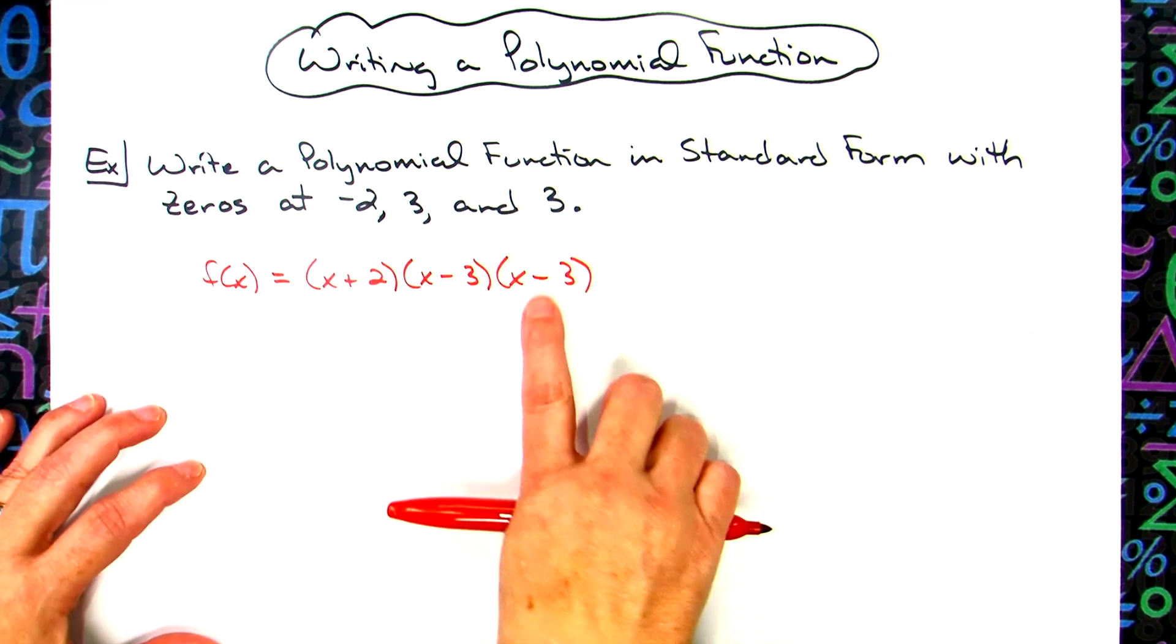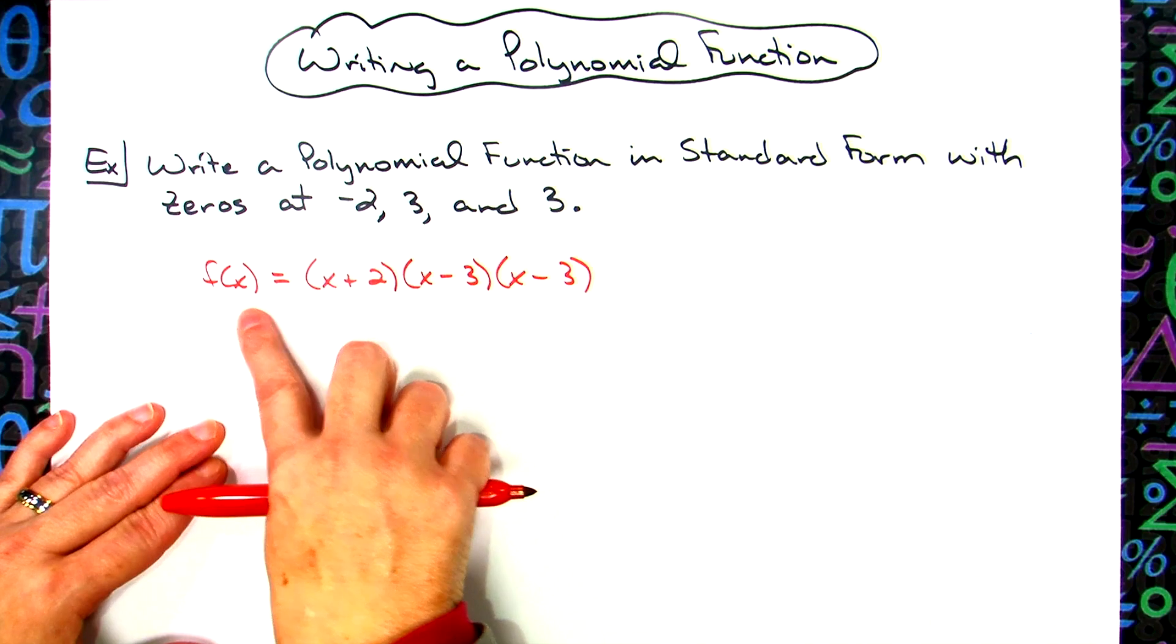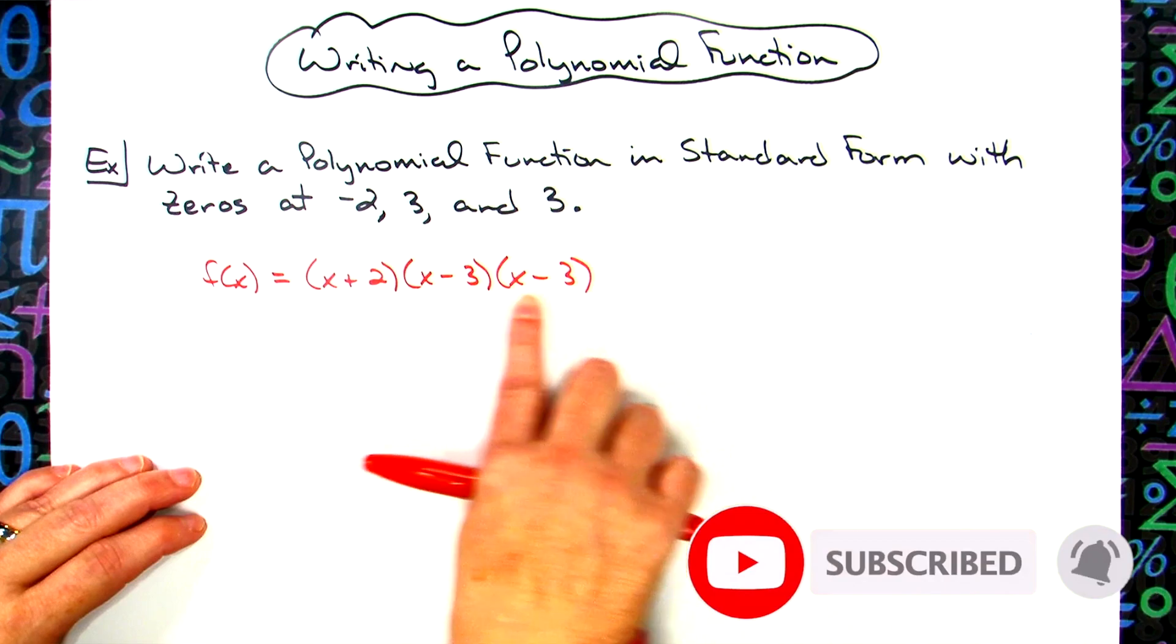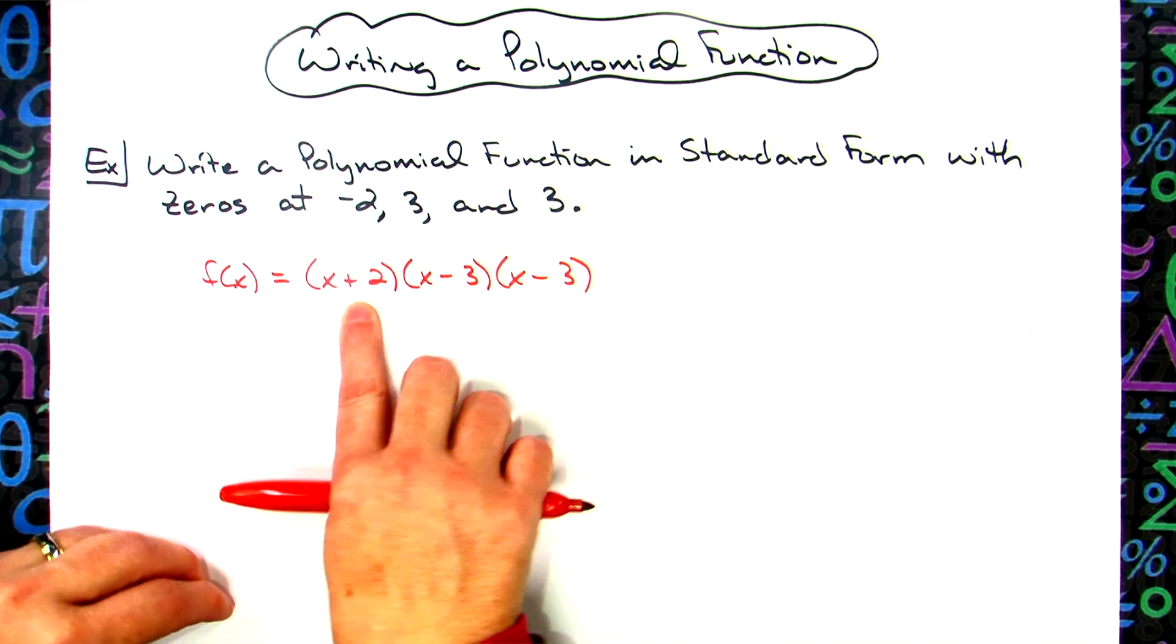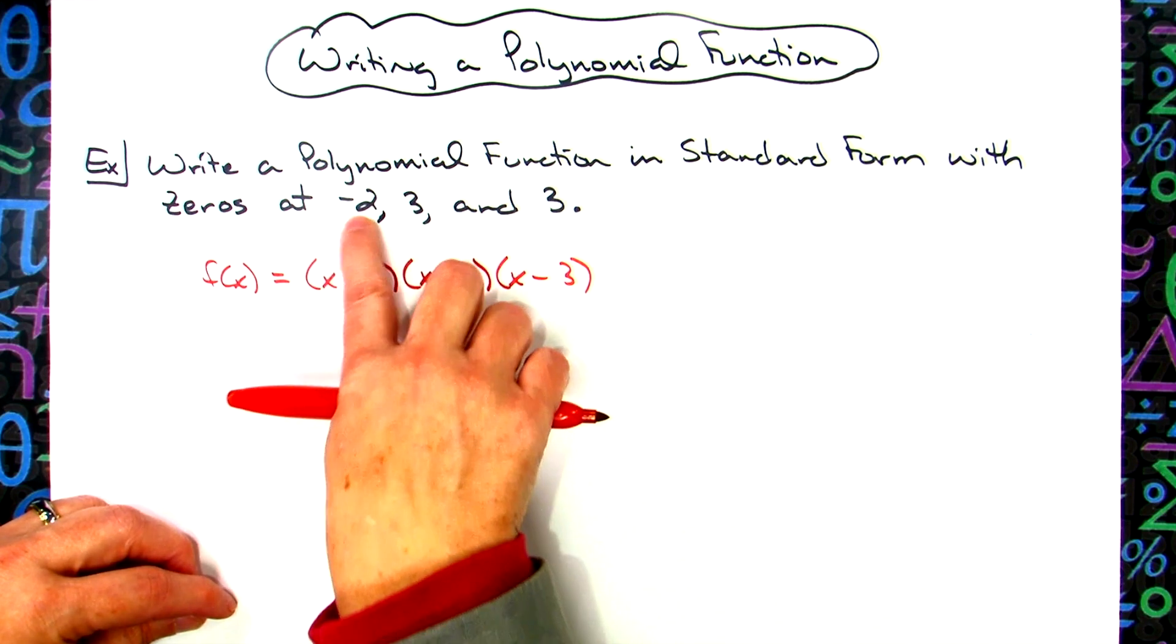Now the reason that we do these as what appears to be the opposite is because if we had started with a polynomial function, had factored it, and gotten down to this part right here, we would have used the zero product principle, which would have told us that we could set each one of these equal to zero and solve.